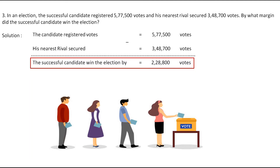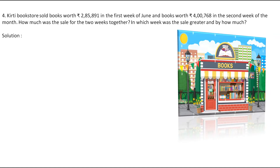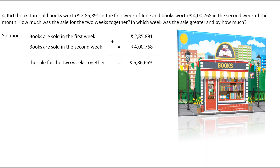Now let's see the next question. Kirti Bookstore sold books worth Rs. 2,85,891 in the first week of June and books worth Rs. 4,00,768 in the second week of the month. How much was the sale for the two weeks together? In which week was the sale greater and by how much? To find the sale together, we add them up. The first week is Rs. 2,85,891 and the second week is Rs. 4,00,768. The sale for the two weeks together is Rs. 6,86,659.